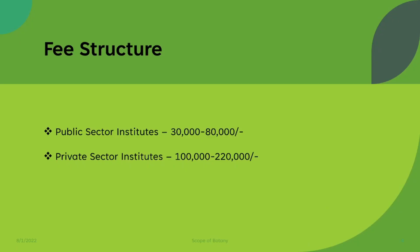Regarding the fee structure, there is great diversity among public and private sector universities, especially after post-COVID inflation has caused fees to vary enormously, so an exact estimation is difficult. In general, public sector universities cost around 30,000 to 80,000 PKR per semester, while private sector institutes can charge between one lakh to two lakh twenty thousand rupees per semester.